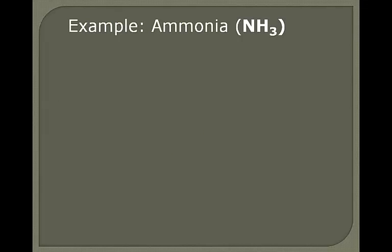Let's take a look at ammonia. Ammonia is NH3, so nitrogen has five valence electrons, and we draw three hydrogen atoms. Hydrogen and nitrogen will share this bond, will share this pair of electrons, and then nitrogen will share with each hydrogen atom. Nitrogen still has its two valence electrons all by itself, and each hydrogen bonds to nitrogen.